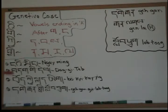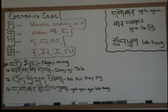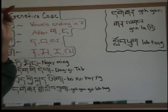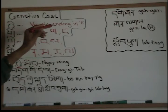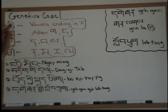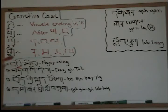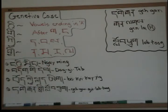Our first example is ngai-ming. Here's the genitive particle. If you notice, ngai has the inherent A sound — it's a vowel ending with the inherent vowel sound A, so it will take the E. So ngai-ming means 'my name.'